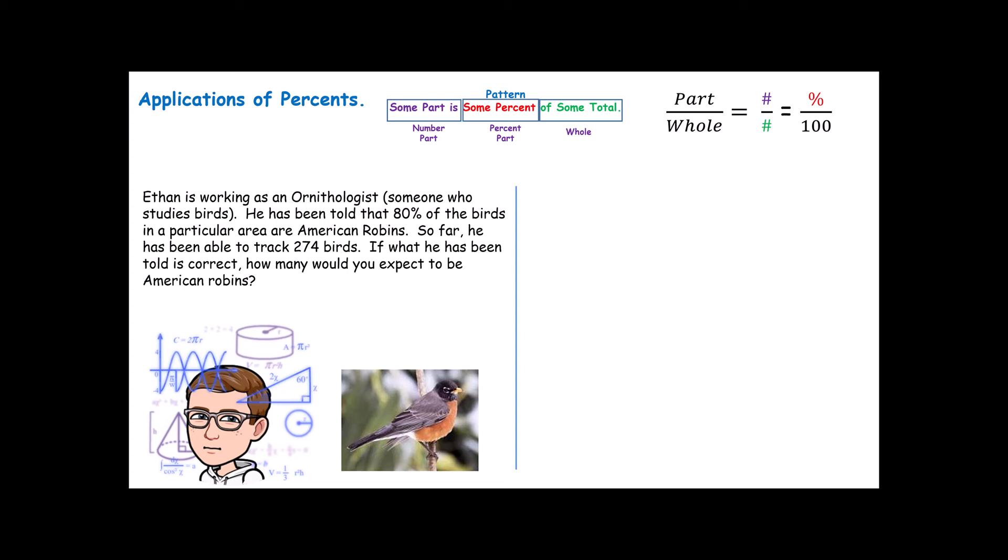So we read through here, and we read it a couple times trying to find some important piece of information. For example, I can see an 80% already. Since we're talking about percent problems, it's very likely that's important. But here's what I want you to realize. We are talking about 80% of the birds being American robins. Now that phrase is extremely important for us. Because our pattern says that some part should be some percent of some total. In this story, we're told that 80% of the birds are American robins. So in this story, the robins are the part. The robins should be 80% of the total number of birds.